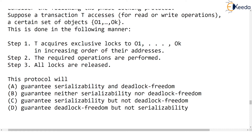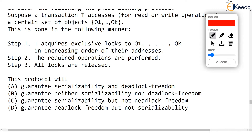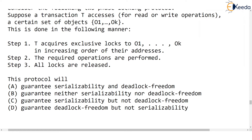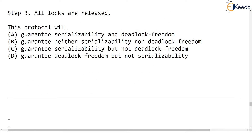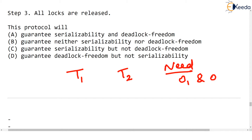You might think that two-phase locking protocol does not offer deadlock freedom and conclude this is not valid — but here comes the twist. In this modified 2PL, while acquiring exclusive locks it is necessary to acquire locks in the increasing order of addresses. Imagine two transactions T1 and T2 that both need to access O1 and O2.